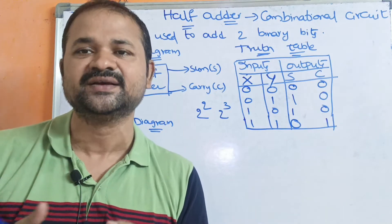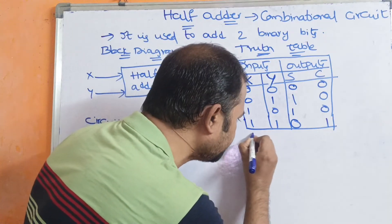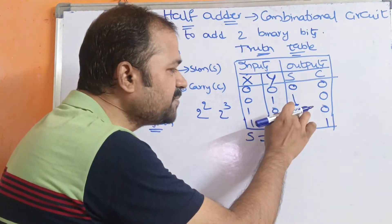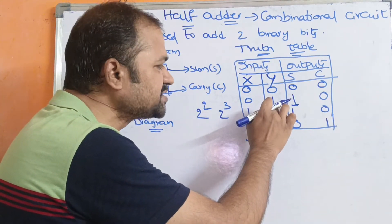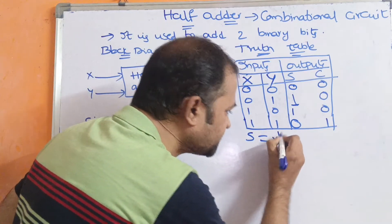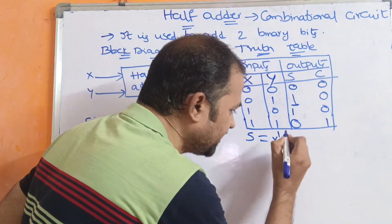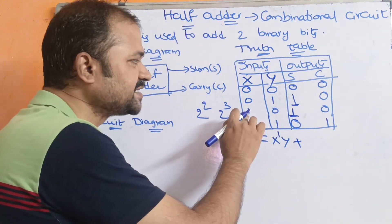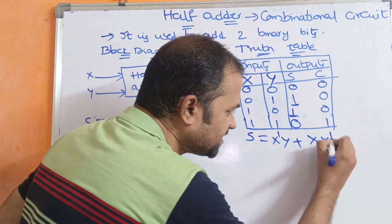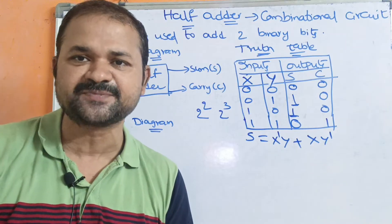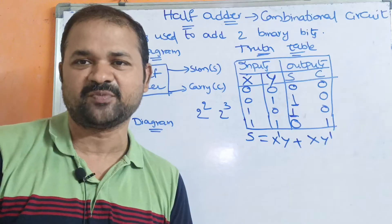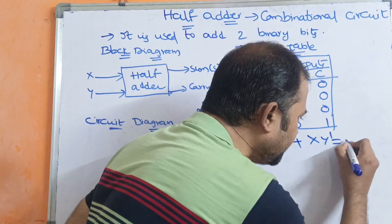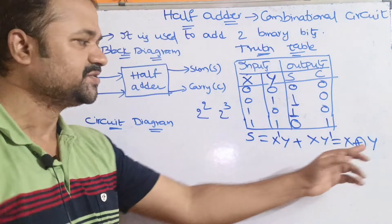Now we evaluate the expression for sum and carry. Observing the sum column, sum is 1 when x is 0 and y is 1, which can be written as x-bar·y. Sum is also 1 when x is 1 and y is 0, written as x·y-bar. So sum equals x-bar·y plus x·y-bar. We know the formula for XOR: x XOR y equals x-bar·y plus x·y-bar. So sum is nothing but x XOR y.